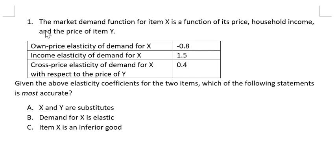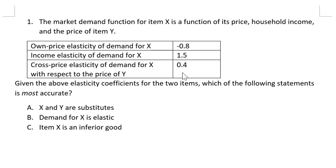Question 1. The market demand function for item X is a function of its price, household income, and the price of item Y. Own price elasticity of demand for X is negative 0.8. Income elasticity of demand for X is 1.5. Cross price elasticity of demand for X with respect to the price of Y is 0.4.